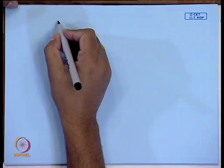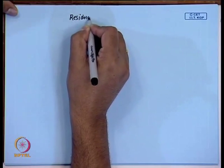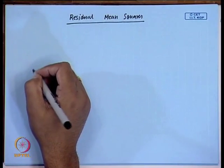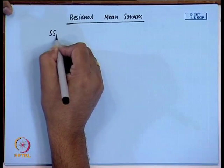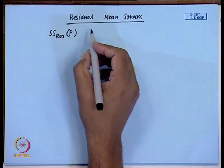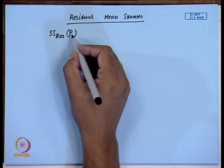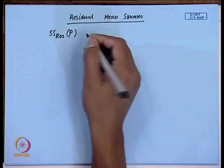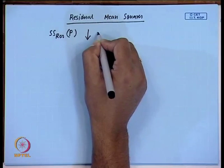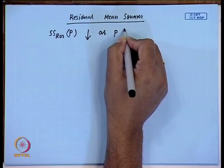We talked about one criterion — the coefficient of multiple determination. Next we will discuss the MS residual criterion, also called the residual mean square. We know that SS_residual(p) decreases as the number of regressor variables increases, but this is not true for MS residual.